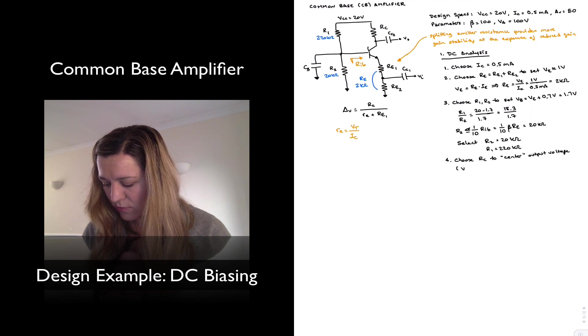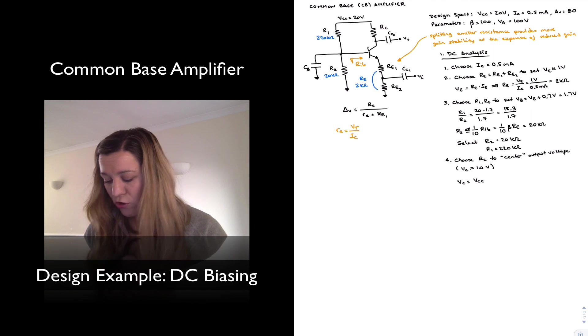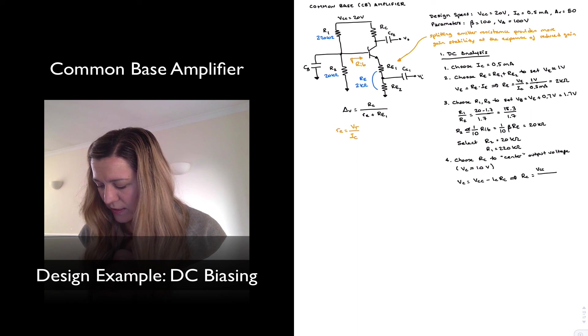And so I'm going to choose RC to center output voltage. So in this case, I want VC to be approximately equal to 10 volts. And VC is going to be equal to VCC minus the voltage drop across RC, which is ICRC. So I can solve for RC, which will just be equal to VCC minus VC divided by IC.